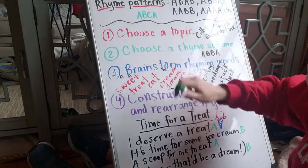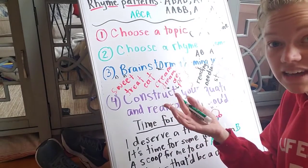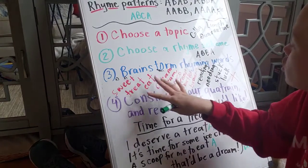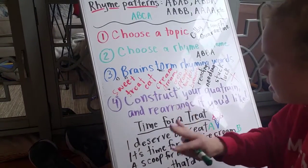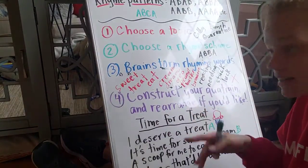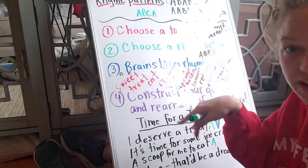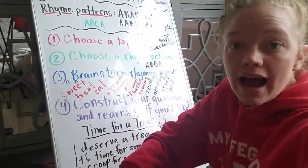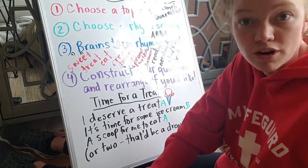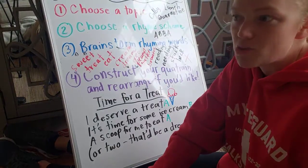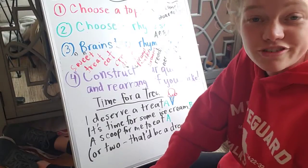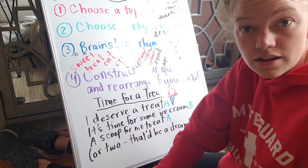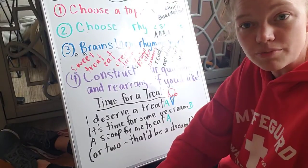So: choose a topic — I came up with a few, you can come up with anything you'd like. Choose a rhyme scheme just to have an idea in your mind of where you want to go. Brainstorm some rhyming words that fit in with your topic. Then start constructing your quatrain — you might have a new idea once you get started, I did. I switched some of my words out for both poems. The main gist is: I didn't plan these poems in advance. I wanted to be able to brainstorm in front of you so you could see the way I would come up with a poem. This is not something you have to be a language arts teacher to do — poems are for everyone, writing is for everyone.